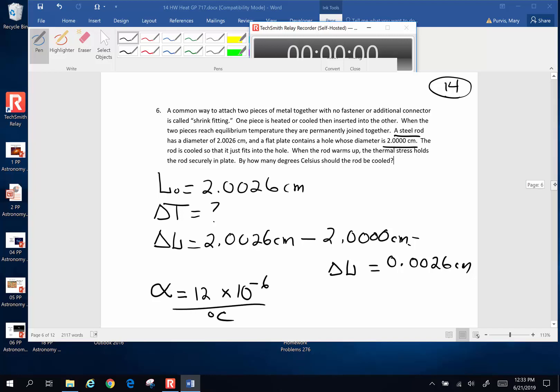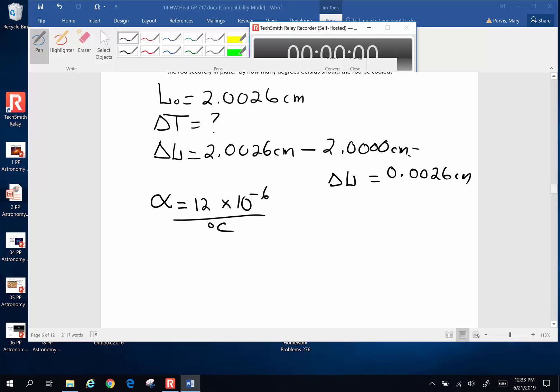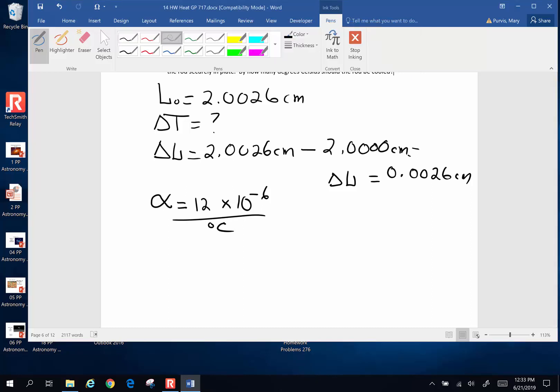Lots of different thermal expansion coefficients. Steel is kind of like cookies, everybody's got a slightly different recipe. So there is definitely a range on steel. The equation is the change in length is the original length, alpha, change in temp. And we're solving this time for change in temp. So change in temperature is going to be the change in length divided by the original length, alpha.